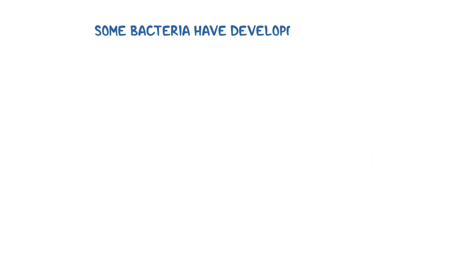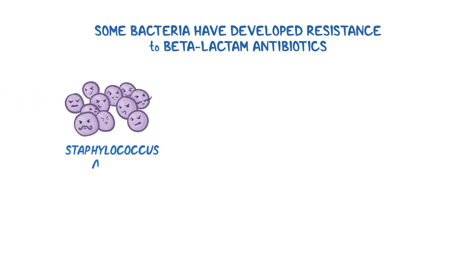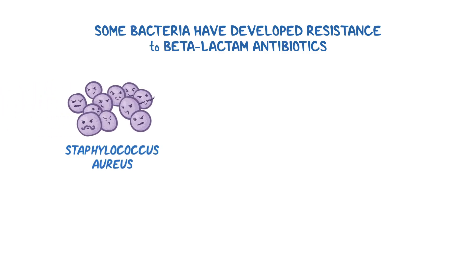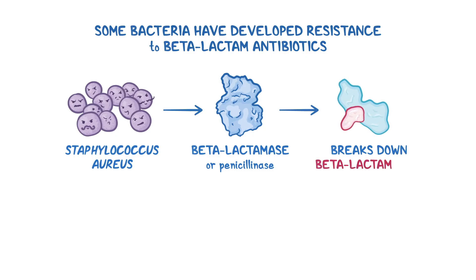Some bacteria have developed resistance to beta-lactam antibiotics. The most notable is Staphylococcus aureus, which has developed an enzyme called beta-lactamase, or penicillinase, that breaks down the beta-lactam ring within the antibiotic, rendering it ineffective.